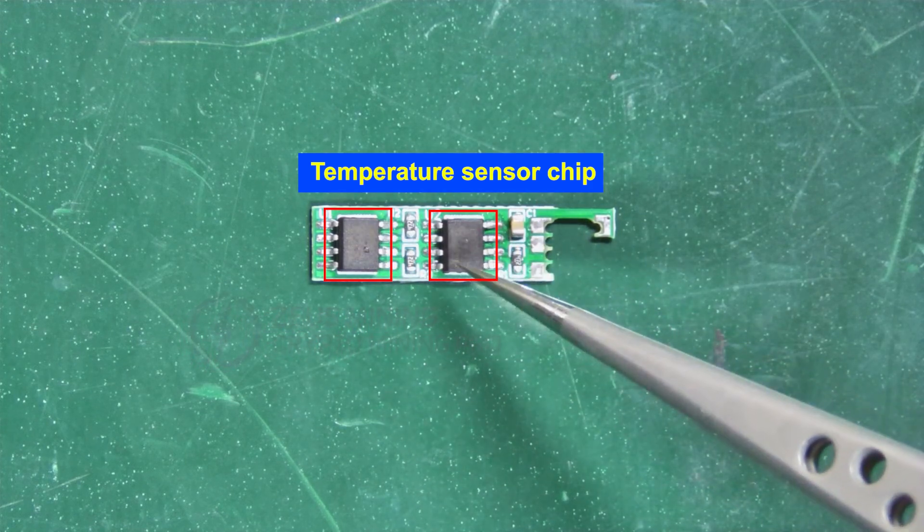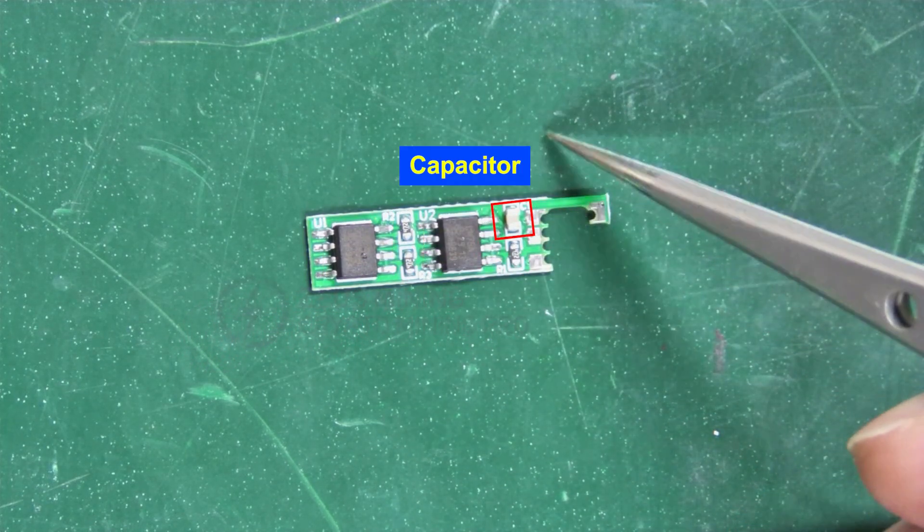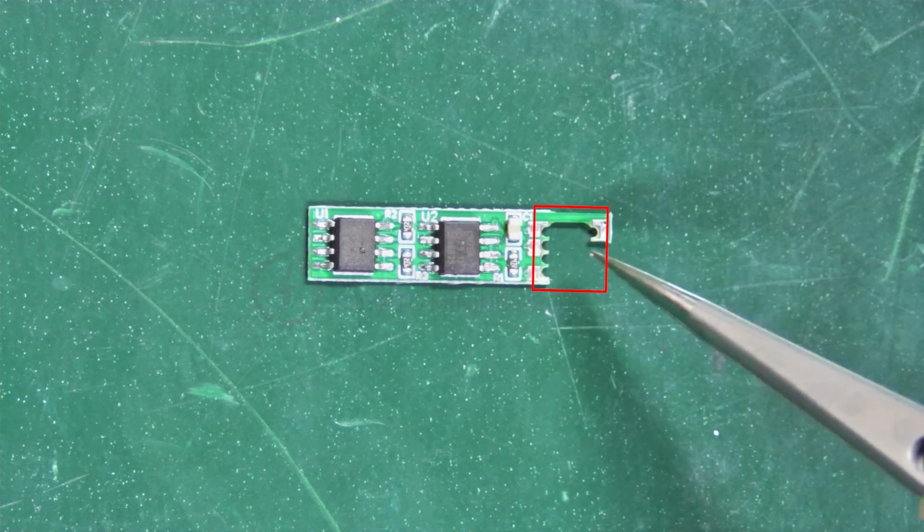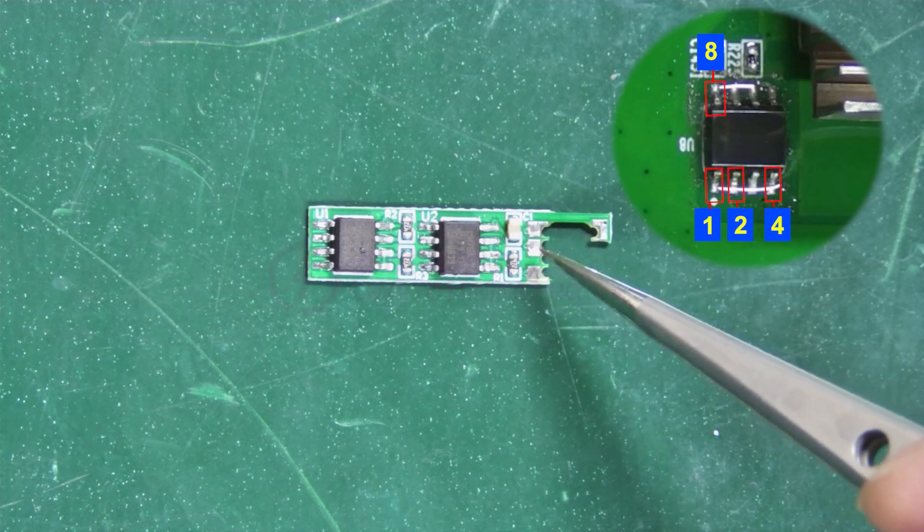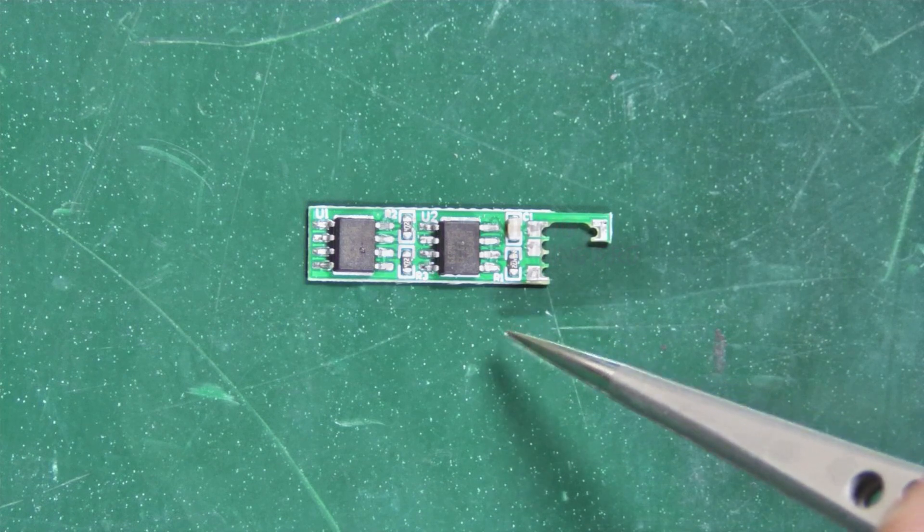On this module there are two temperature sensing chips, three resistors, and one capacitor integrated. These slots are designed for easy soldering, corresponding to pins 1, 2, 4, and 8 of the original temperature sensing chip on the hash board.